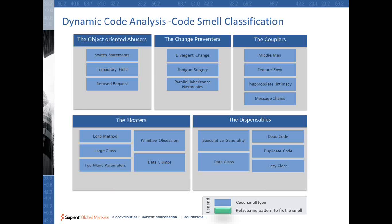For example, this cheat sheet I have created here is very useful. What I have tried to do is identify the different patterns of smelly code — code which is not written up to quality. That smelly code is organized into five different buckets: object-orientation abusers, couplers, bloaters, and dispensables.